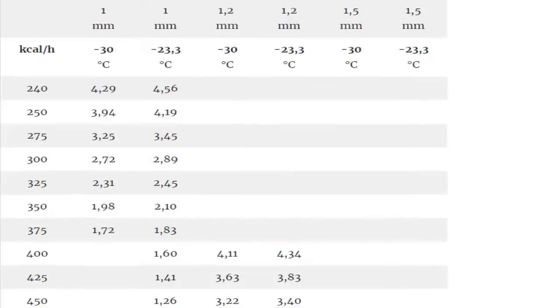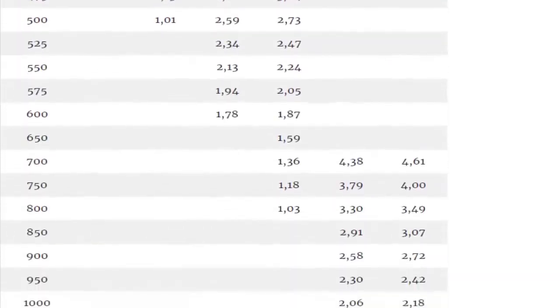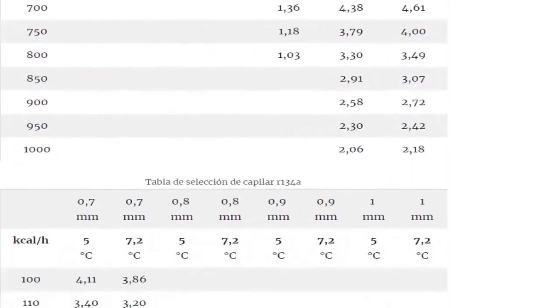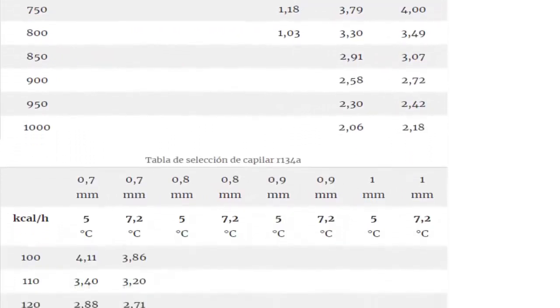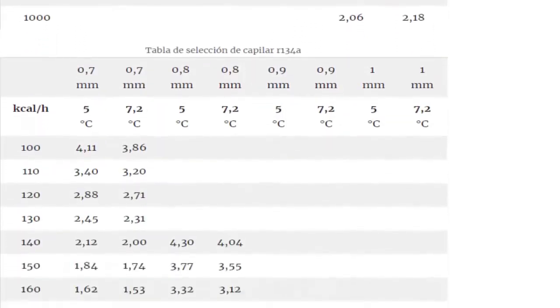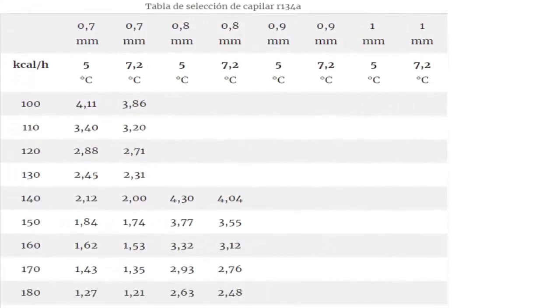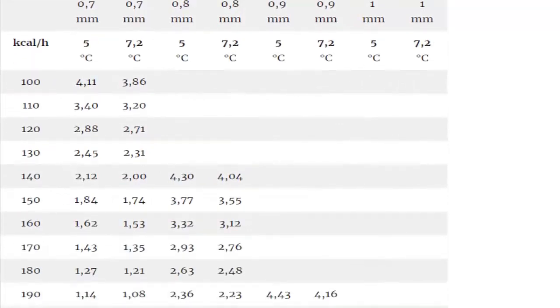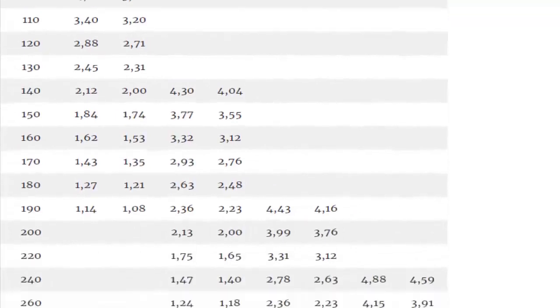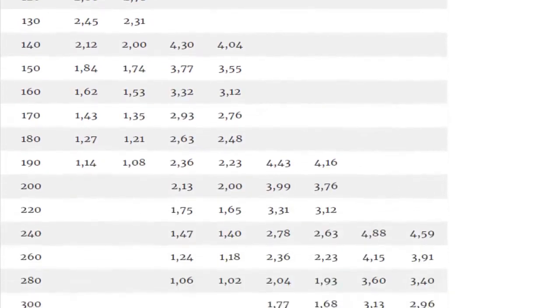5. There are tables that allow you to select the capillary taking as a reference the electrical power of the compressor motor in HP. However, it is best to use the cooling capacity of the compressor, measured in BTUs per hour, kilocalories per hour, or watts. 6. The problem with using HP as a selection parameter is that for the same HP value you can have different cooling capacities, since it will be influenced by the efficiency of the compressor.